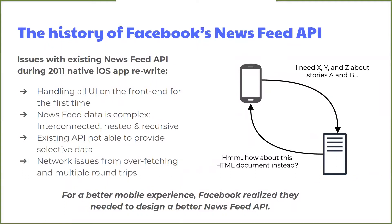The existing APIs weren't designed to allow developers to expose a rich, newsfeed-like experience on mobile. They didn't have a hierarchical nature or let developers select the exact data that they needed. They were, in fact, designed to return HTML back to a web browser. What this meant was that the client application would need to make several round-trips to the API to get the info that it wanted. For example, it might have to first get one story, and from that story, figure out what other stories it needed to request to complete the feed, and keep repeating that process until it got all the information it needed.